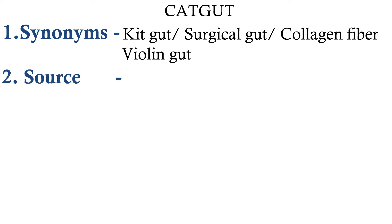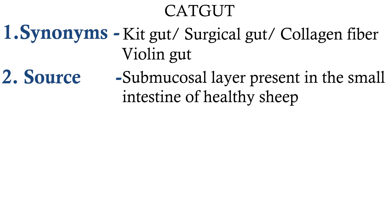The source of catgut is the submucosal layer of small intestine of a healthy sheep or goat.